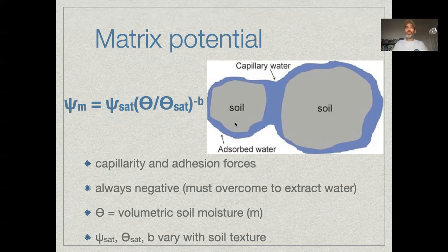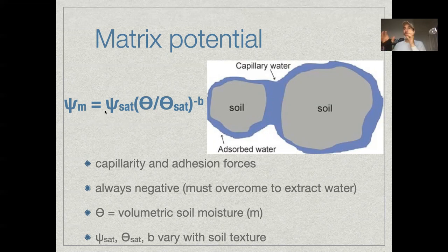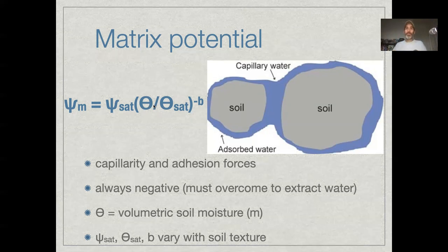There's a standard model that we use to describe that, given by this equation here, which says that our matrix potential at any point, any value of soil moisture depends on the matrix potential at saturation. So that's when the water is completely full. This one is completely full with water. And then that matrix potential changes with this term, θ over θ_sat. So θ is the volumetric soil moisture, the cubic meters of moisture per square meter of soil, with units of meters.